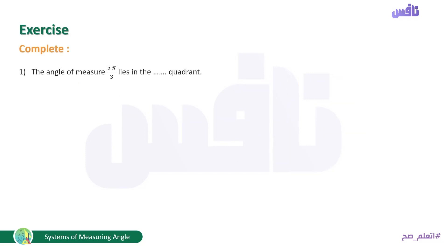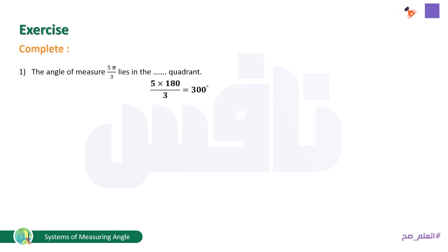Exercise: complete. Number 1 — the angle of measure 5π/3 lies in which quadrant? Replace π with 180: (5 × 180)/3 = 300°. Since 270 < 300° < 360, the angle lies in the fourth quadrant.